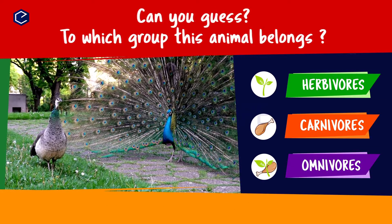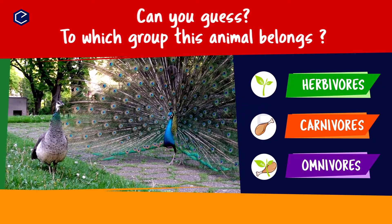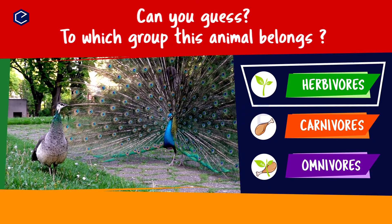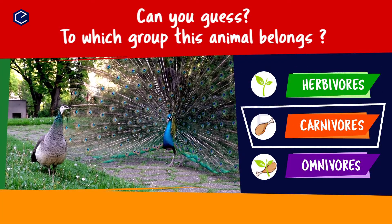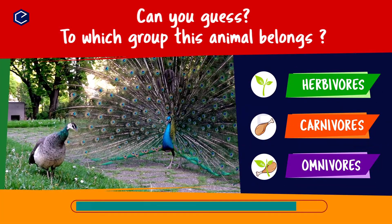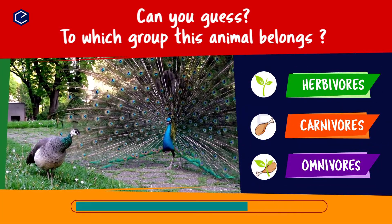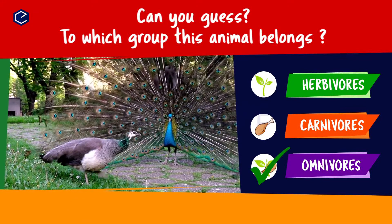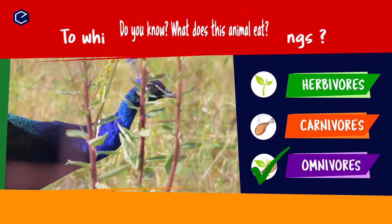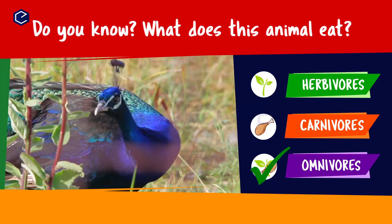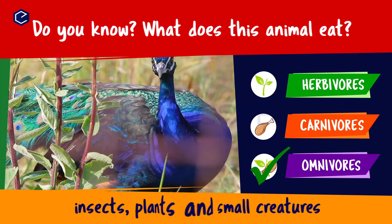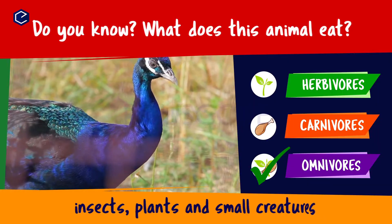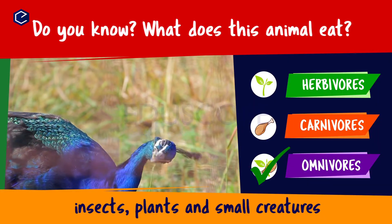Can you guess to which group this animal belongs? Herbivores, carnivores, omnivores. Do you know what this animal eats? A peacock eats insects, plants and small creatures. So peacock is an omnivore.